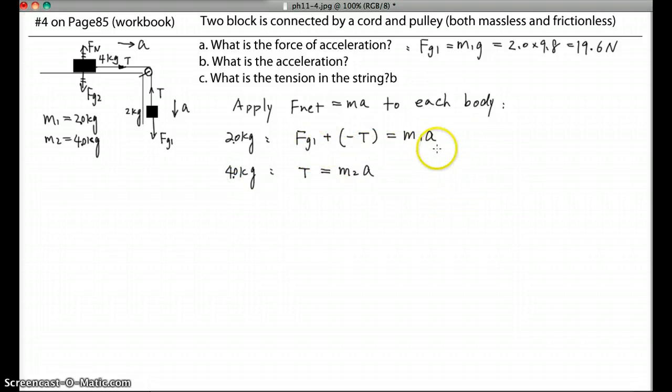You've got two equations. Now you can plug in all the numbers you know. So Fg1 is 19.6, now I still keep the original number from here, and minus T, so equals 2A. And the second one is T equals 4A. So you've got these two equations.